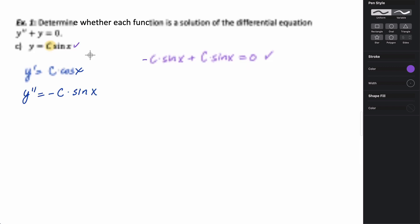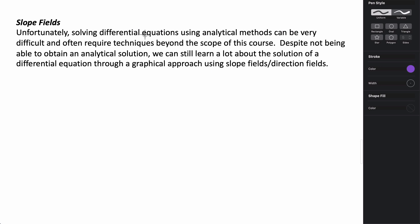In this last example, we were just checking if what we were given was a solution — not actually solving a differential equation. Sometimes solving differential equations using analytic methods can be very difficult, and often the techniques required are beyond the scope of this course. However, even though we're not necessarily able to find an analytic solution, there's still a lot we can learn through a graphical approach using something called a slope field or directional field — basically sketching what the slope of the tangent line would be at a group of points, giving us an idea of what the curve would look like.